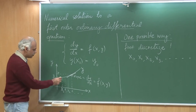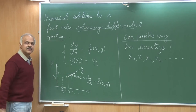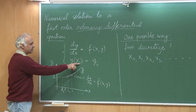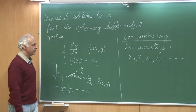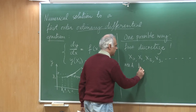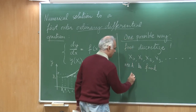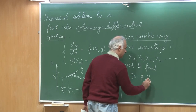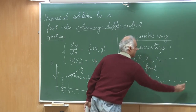All I need to do is estimate what are the values at these different x. Given that at x₀ I already know the value y₀, I need to find y₀, y₁, y₂, y₃ and so on.